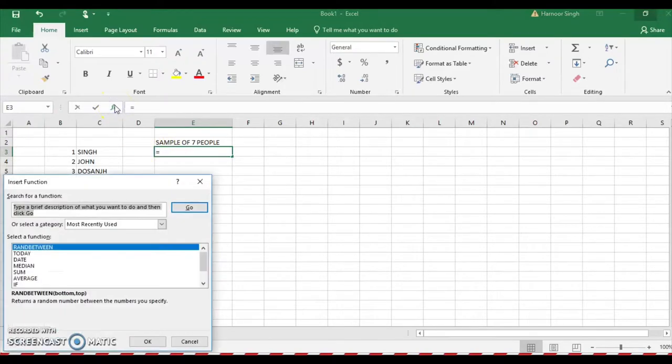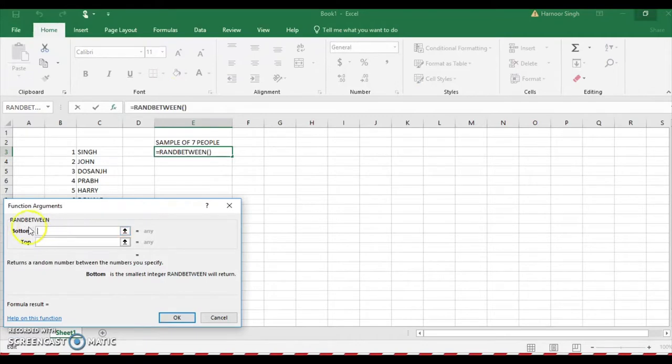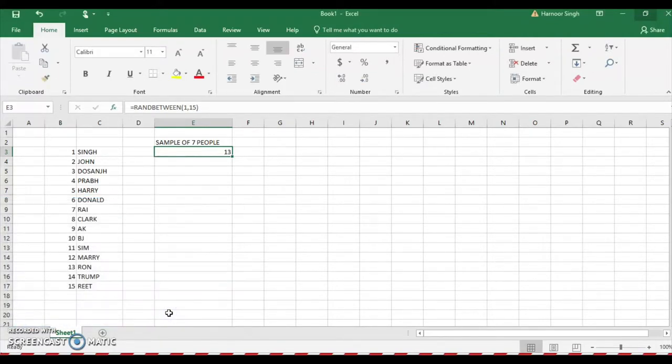Find RANDBETWEEN and you can see the function arguments where you need to write the upper value and the lowest. I wrote the first one as 1 and the last one as 15, and it comes to 13, so the 13th person is selected.